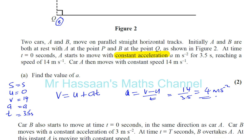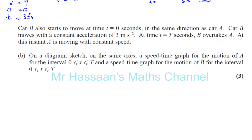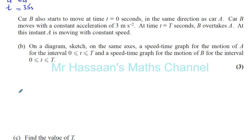Car B also starts to move at time T equals 0 from rest, in the same direction as car A. Car B moves with a constant acceleration of 3 meters per second squared. At time T seconds, B overtakes A. At this instant, A is moving with constant speed. So we've got to sketch a speed-time graph for the motion of A and B between 0 and T seconds.